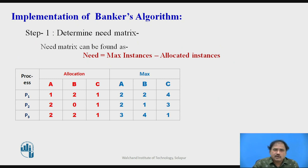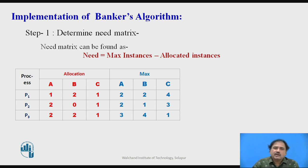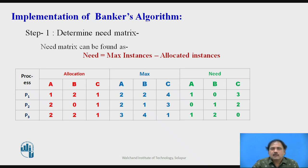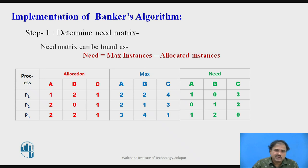When implementing the Banker's Algorithm, in Step 1 we find the need matrix — how many resources we still require to execute P1, P2, and P3. Need equals maximum requirement minus allocated resources, that is, max instances minus allocated instances. So P1 requires 1 instance of A, 0 of B, and 3 of C. P2 requires 0 of A, 1 of B, and 2 of C. P3 requires 1 of A, 2 of B, and 0 of C.